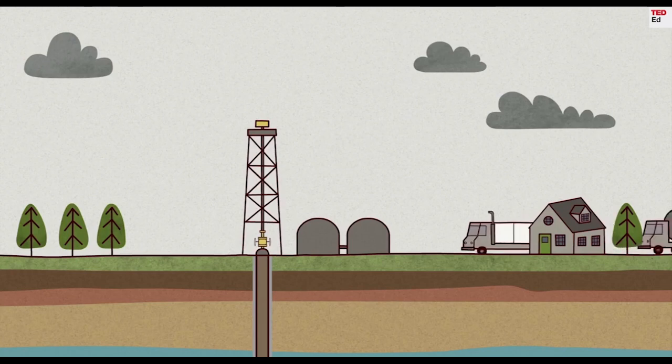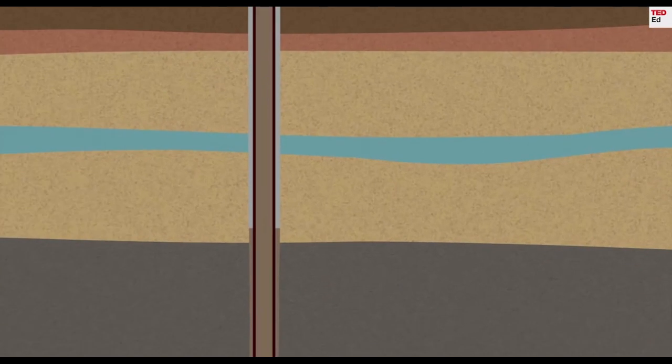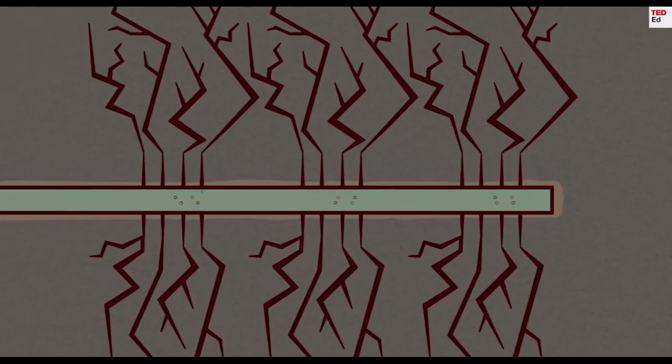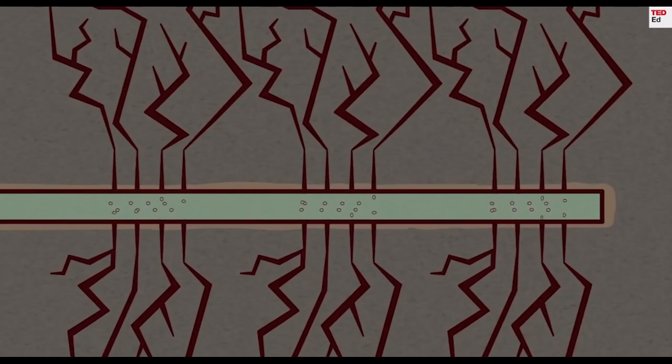About three to four months after the initial drilling, the well is ready for fracking to begin. Fracking fluid is pumped down into the well at a pressure so high it cracks the shale rock, creating fractures through which the trapped gas and oil can escape.